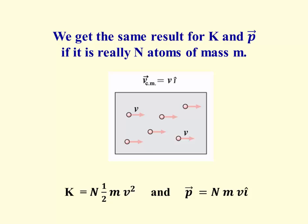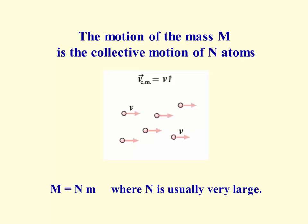Now what happens if we assume it's made up of atoms is nothing really changes. When that object is moving to the right, those atoms are all moving to the right, each one moving at speed v. Each of them has a kinetic energy of ½mv² and a momentum of mvi, and when you combine n of them you get exactly what you had before. That is, the motion of the mass M is a collective motion of n atoms.